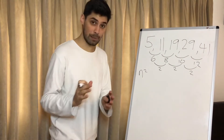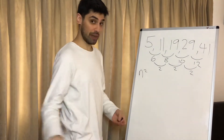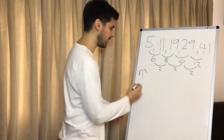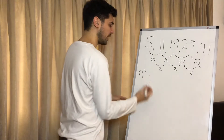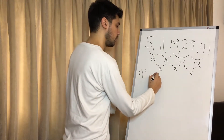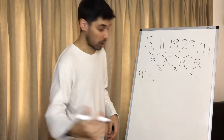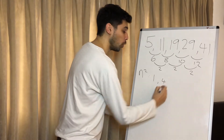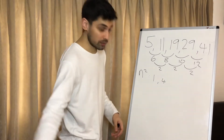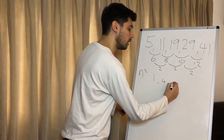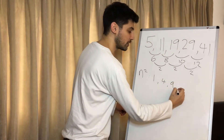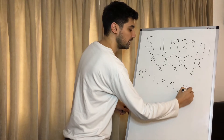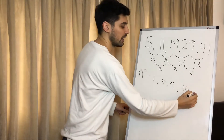The next step: we're going to write out the sequence of n squared, which tells us what we have right now. So n squared gives us 1, because 1 squared is 1; 4, because 2 squared is 4; 9 — it's essentially just all the square numbers — 16, and it goes on.